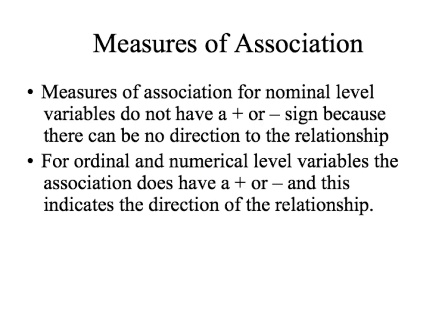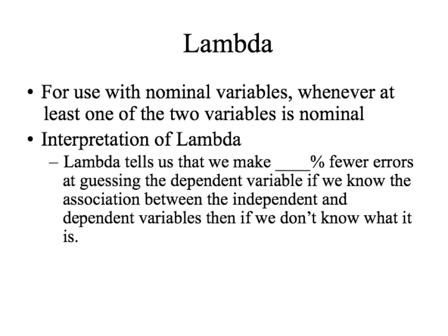There are different types of measures of association. Measures of association for nominal level variables — those variables that don't have any order to their categories — do not have a positive or negative, because there's no direction to the relationship. The positive or negative only applies to measures of association for ordinal and numeric level variables. For nominal variables, the range is just 0 to 1. We use lambda whenever at least one of the variables is nominal, even if the other is ordinal or numerical.